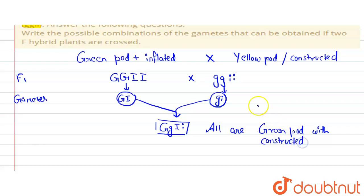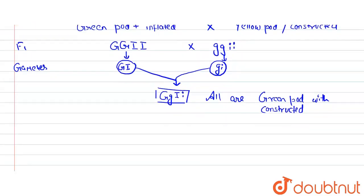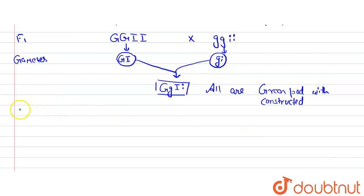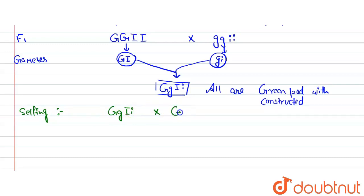Now doing their selfing, we first have to identify their gametes. The F1 hybrid is capital G small g capital I small i, crossed with capital G small g capital I small i. Here we use the 2N rule, where N equals 2, so we get 4 gametes.